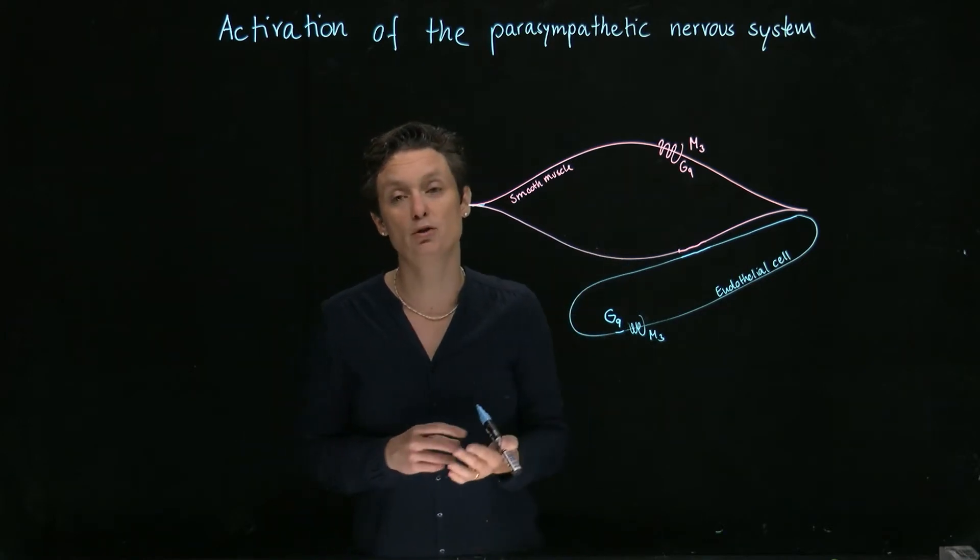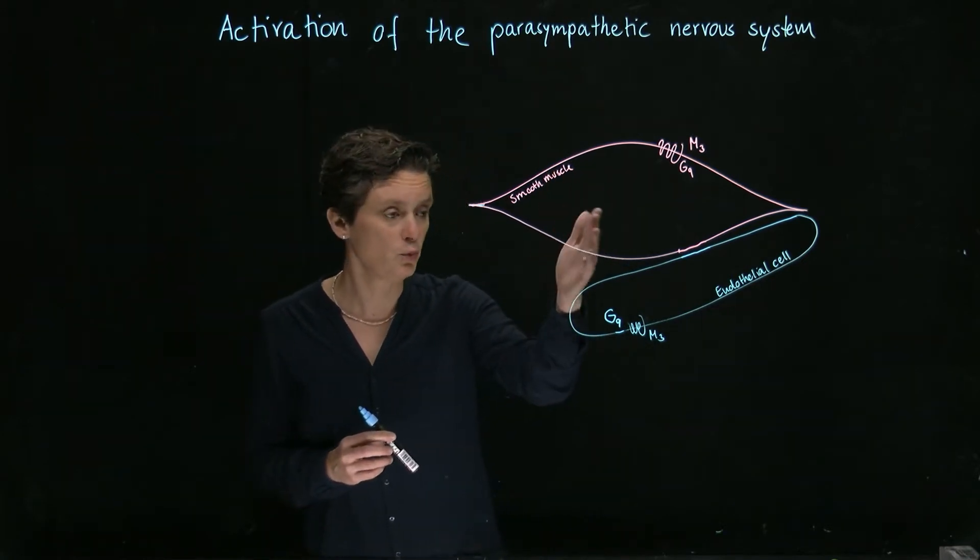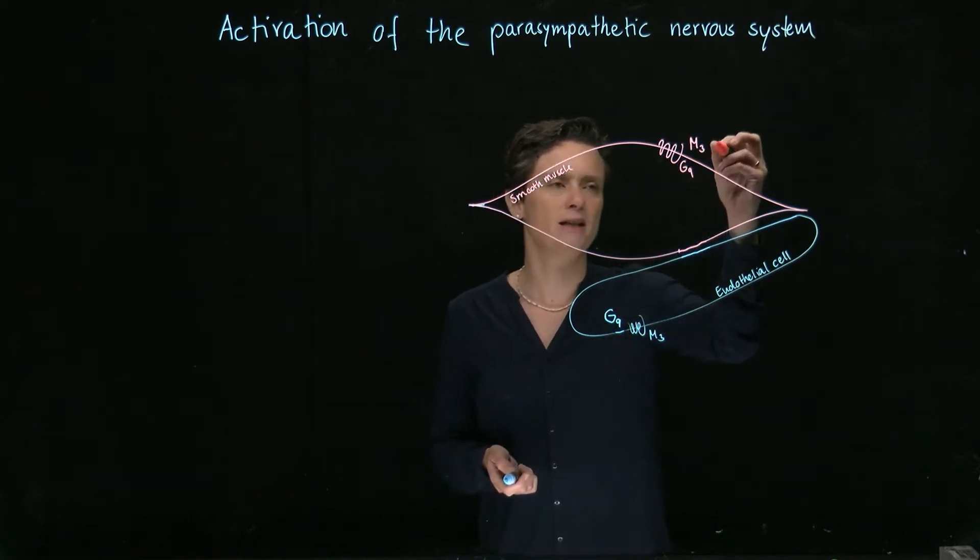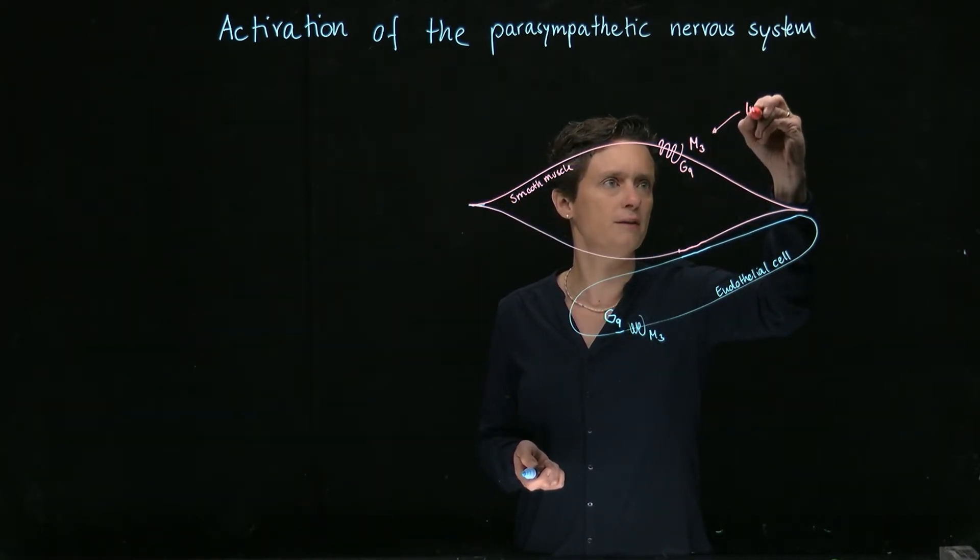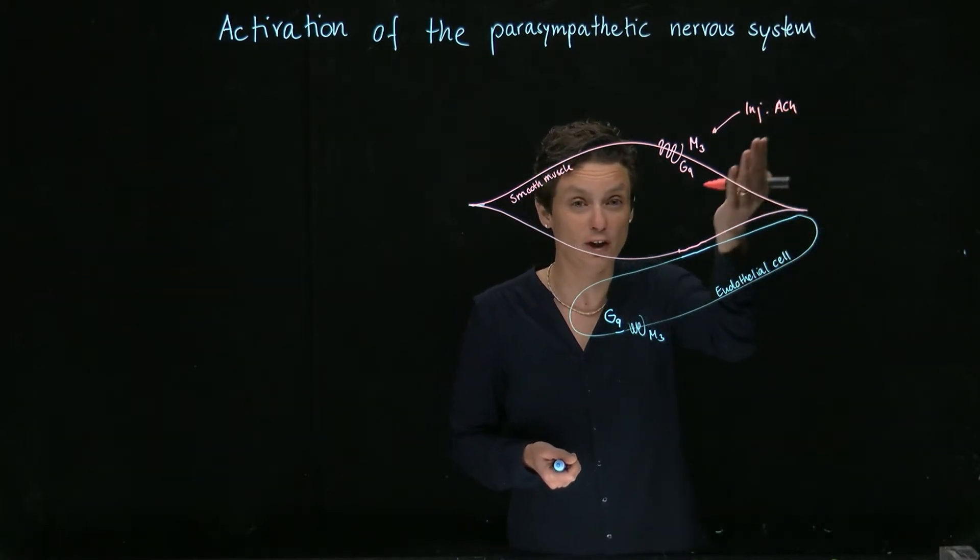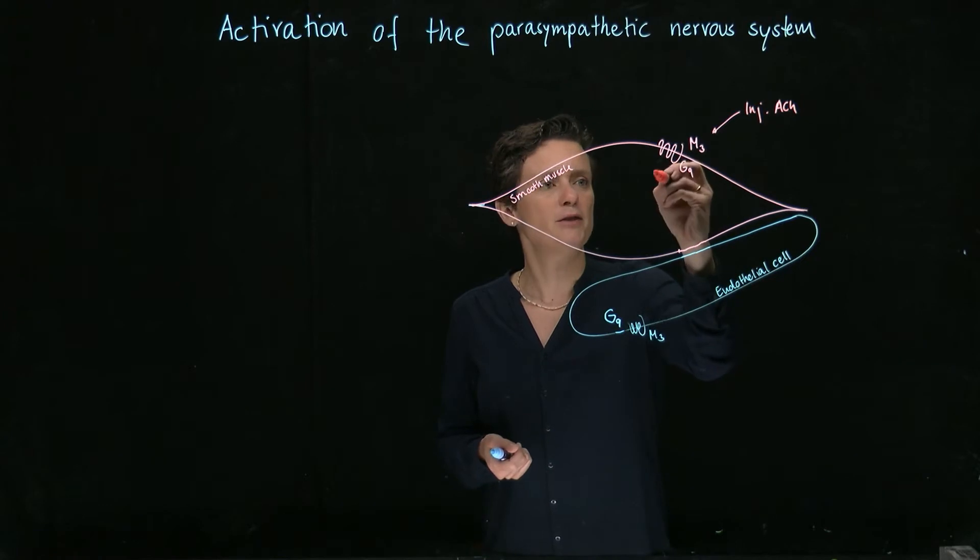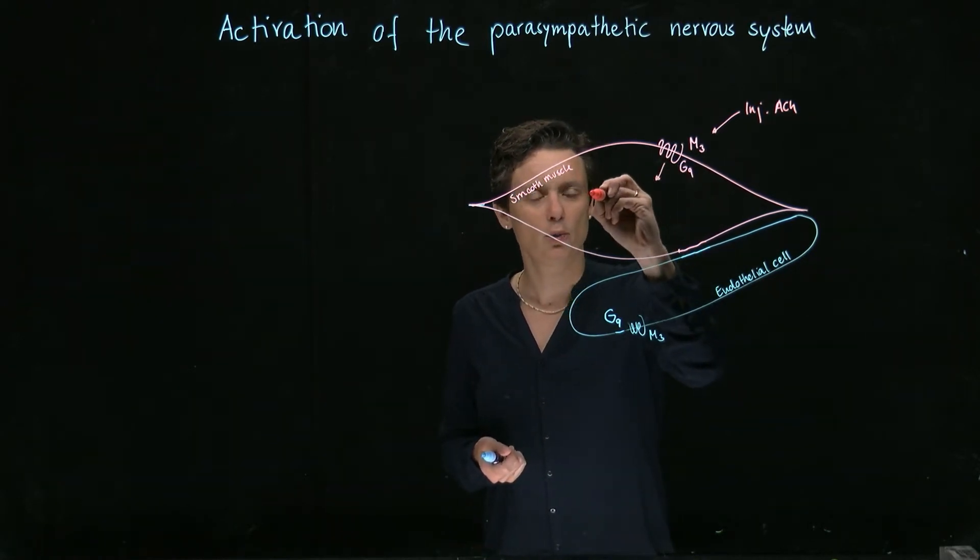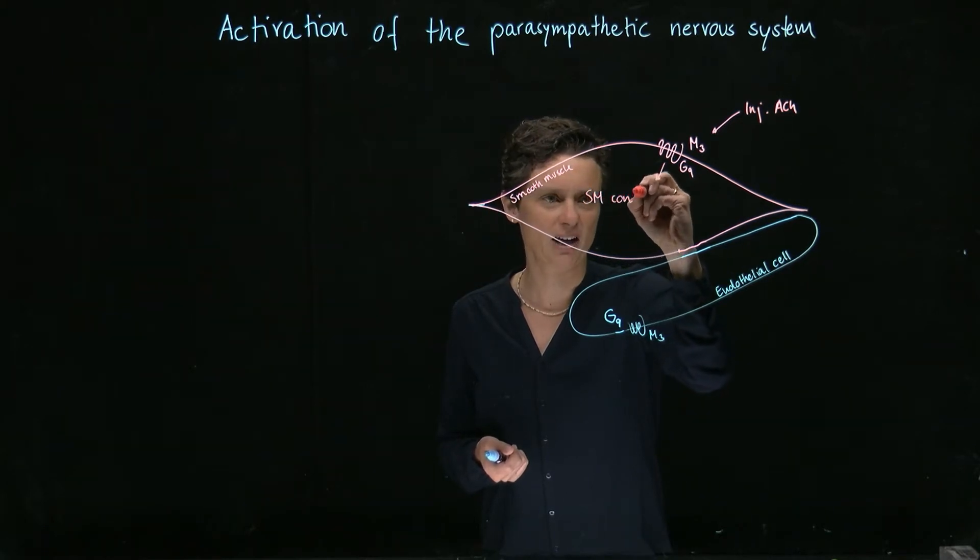So I just want to finish up talking a little bit about the effects of the M3 receptors on the blood vessels. We find them in two different locations, on the smooth muscle and on the endothelial cells. When you're activating with, let's say, injected acetylcholine, again, there's no acetylcholine physiologically around. But if you stimulate a Gq-coupled receptor, you're going to get increased calcium, which is going to lead to smooth muscle contraction.